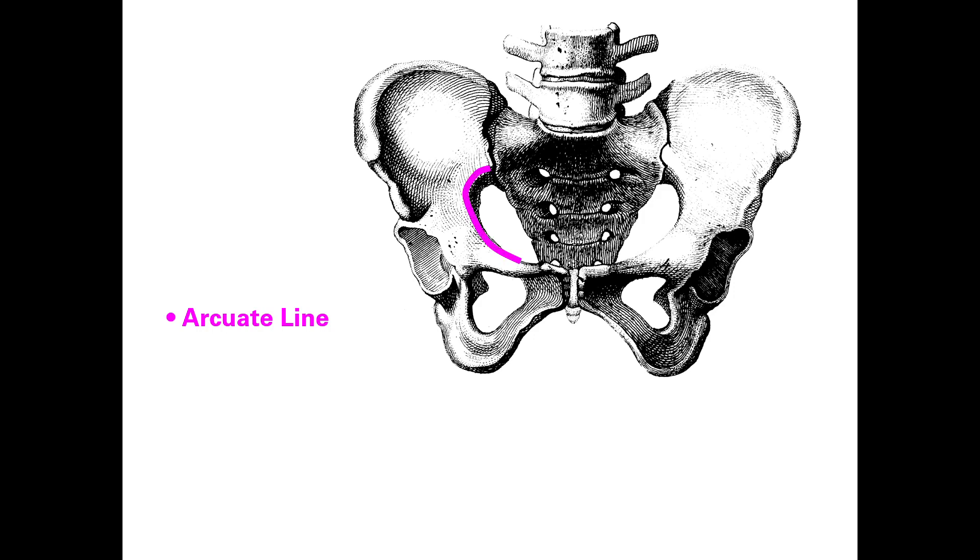Looking at the full pelvis, you can see your arcuate line, which separates the top bowl of the pelvis versus the lower bowl of the pelvis. And then we can see our pubic symphysis, which connects anteriorly the two oscoxci bones with the sacrum in the back.